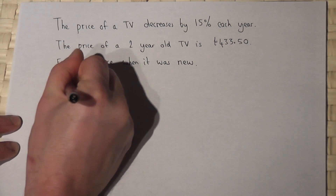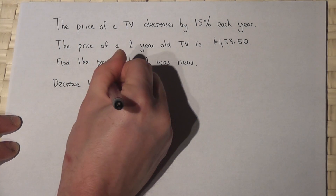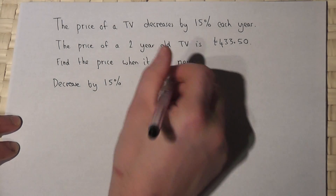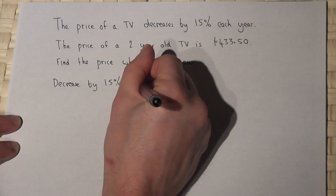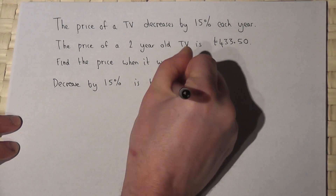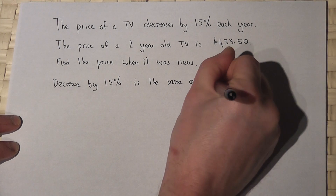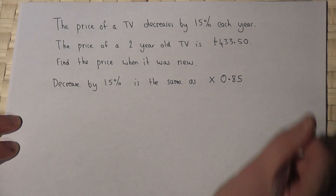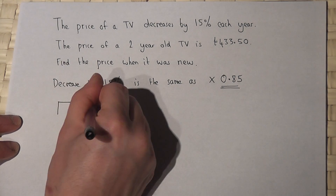There's one key factor: to decrease by 15% is the same as finding 85%, which is the same as multiplying by 0.85. So if we have a new TV...